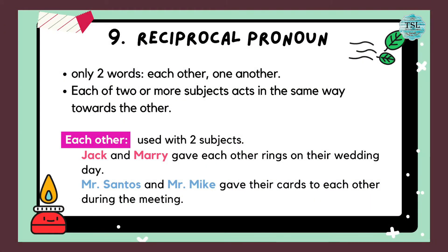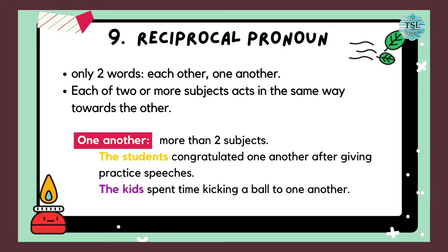Next is reciprocal pronoun. There are only two words in reciprocal pronoun which are each other and one another. We use this type of pronoun when each of two or more subjects act in the same way towards the other. Each other is used with two subjects. For example: Jack and Mary gave each other rings on their wedding day. Mr. Santos and Mr. Mike gave their cards to each other during the meeting. But one another is different — it is used when there are more than two subjects. For example: the students congratulated one another after giving practice speeches. The kids spend time kicking the ball to one another.